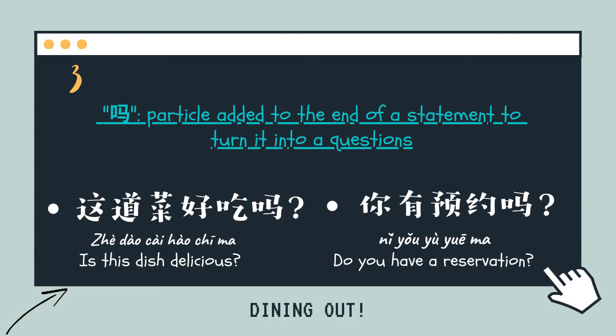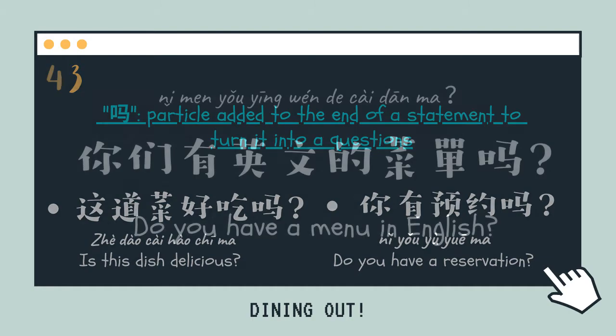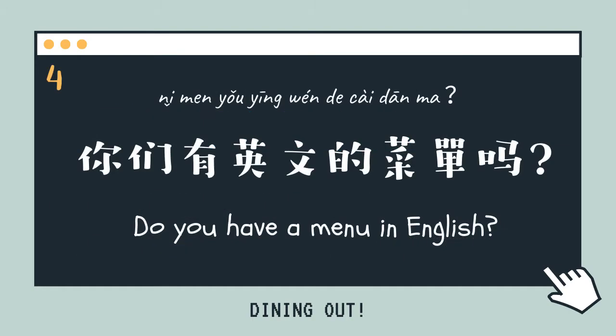For example: 這道菜好吃嗎? — Is this dish delicious? 你有預約嗎? — Do you have a reservation? 你們有英文的菜單嗎? — Do you have a menu in English?